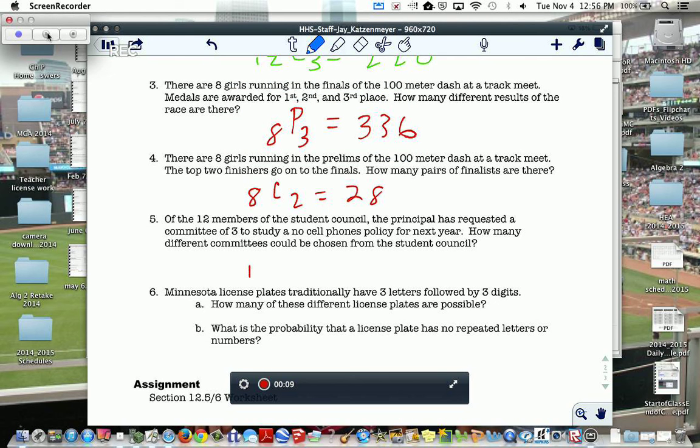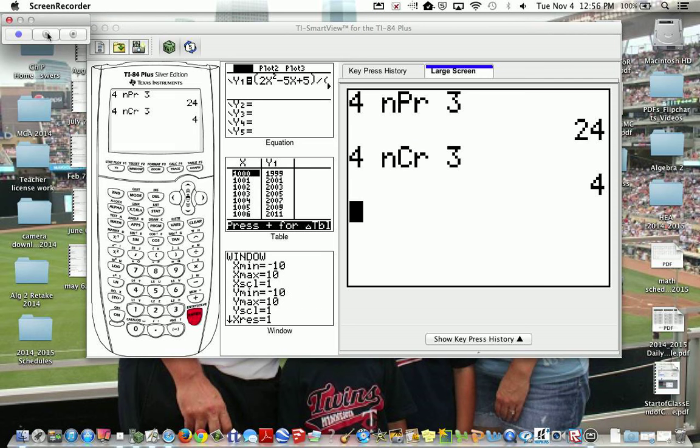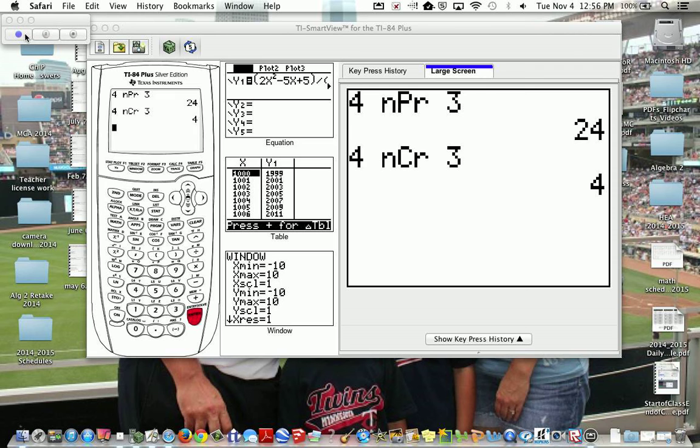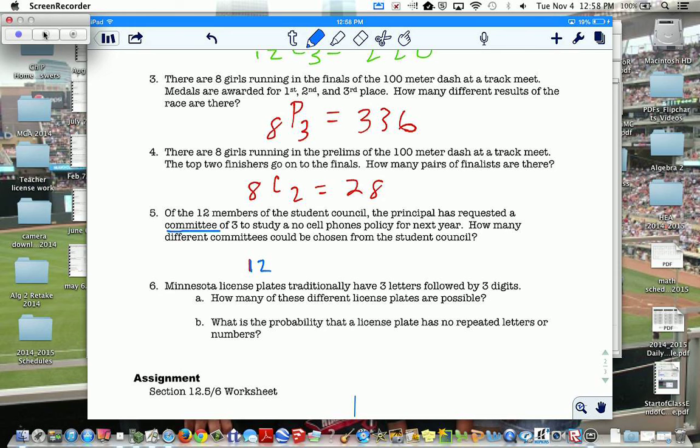Now, number five, of the 12 members of the Student Council, the principal has requested a committee of three. Now, what we have to understand is it doesn't matter if you're chosen first or second or third, you're one of the 12 people. So, we have 12 members of the Student Council. So, it's a combination because I only have to be one of the three to be on that committee. So, 12, math, slide over probability, combination, three, and we're getting 220.